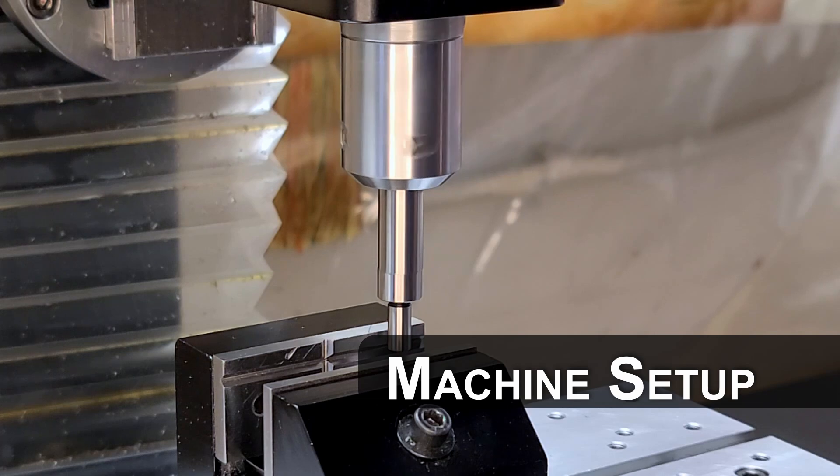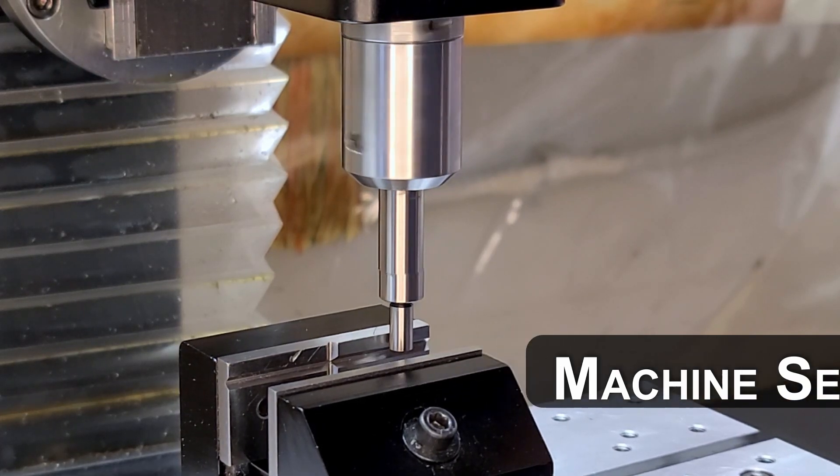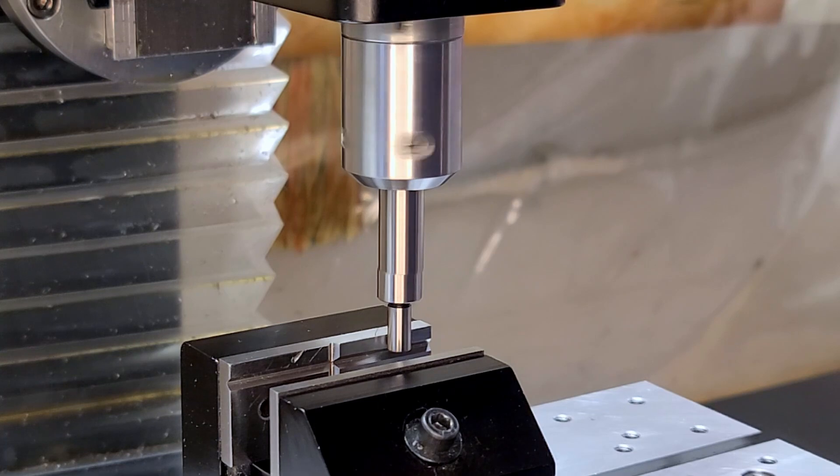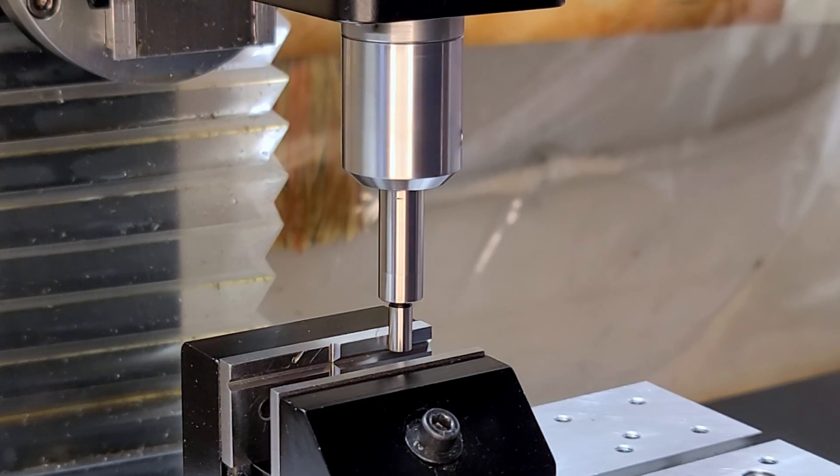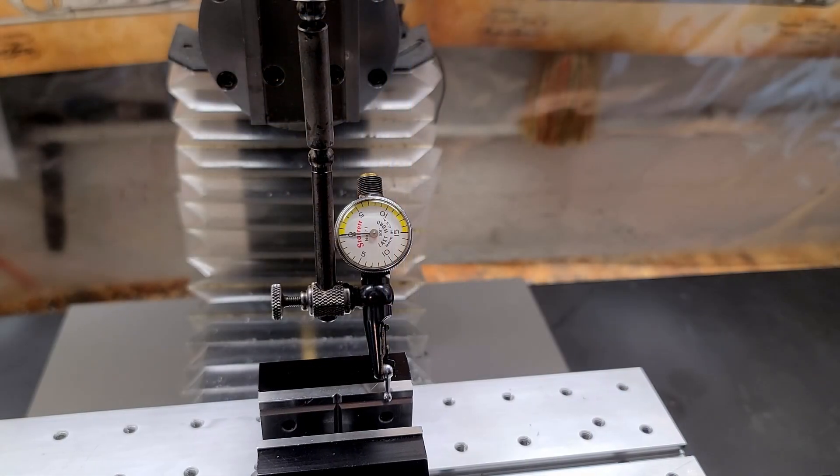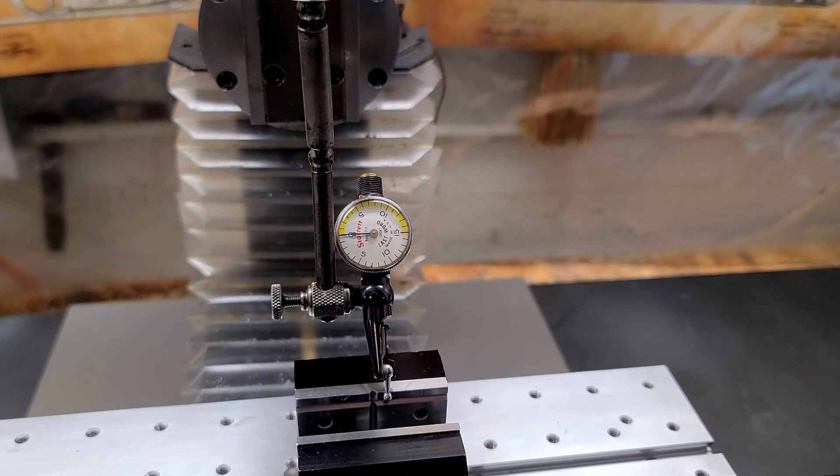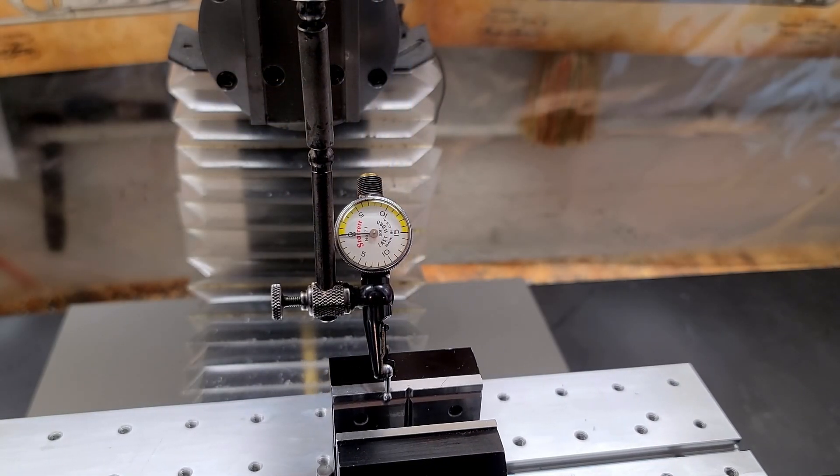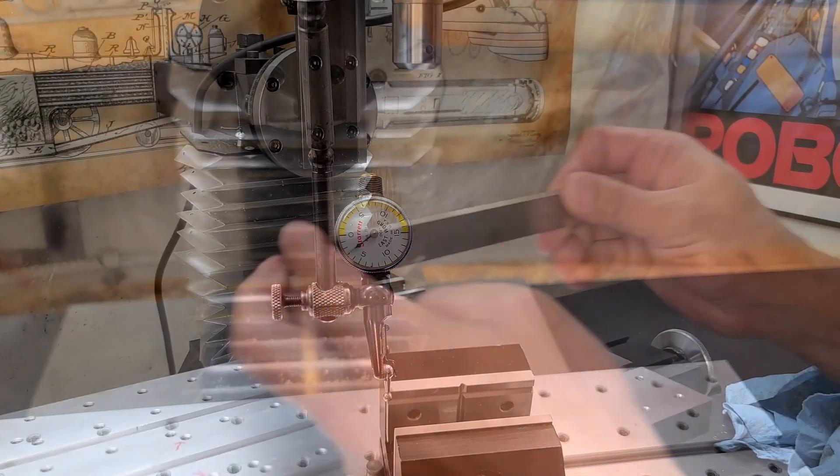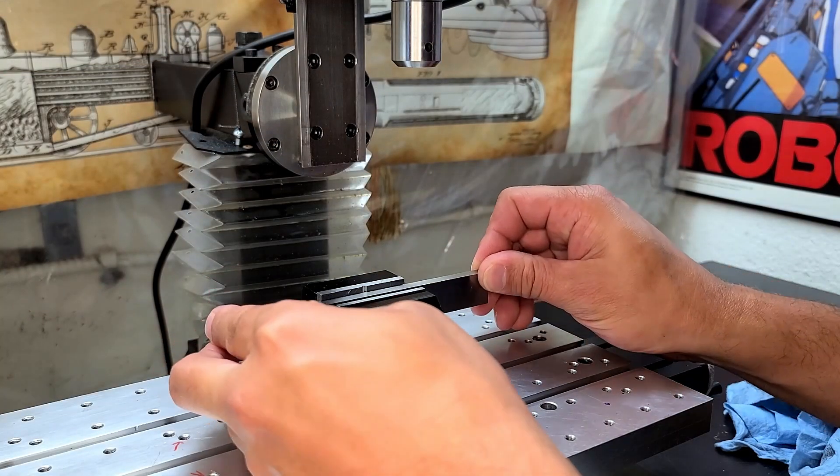One of the first things I'm going to do is set up my zero. My plan is I'm going to use my edge finder and line up the quill on or zero out the quill on my mill on the hard jaw of the vise. Then I'm going to double check just to make sure that everything's nice and trammed in. And as you see, it's holding well within a tenth, so I'm happy about that.